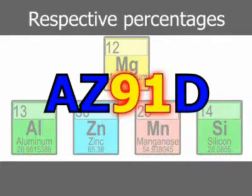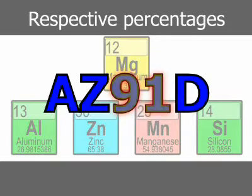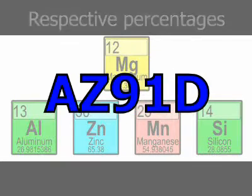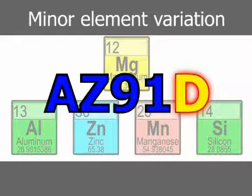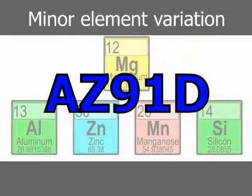The letters are followed by numerals indicating the respective percentages rounded off to whole numbers. A letter in the next position indicates a slight variation in composition not reflected in the preceding characters, such as a minor alloying element variation.